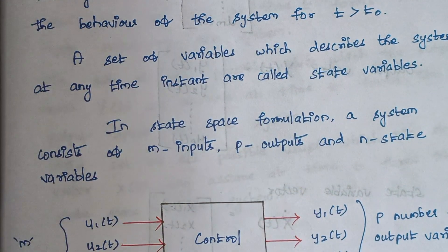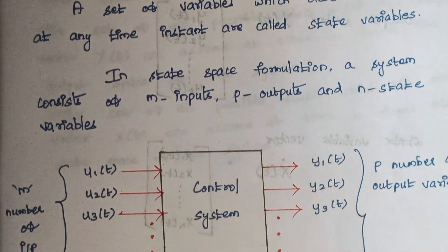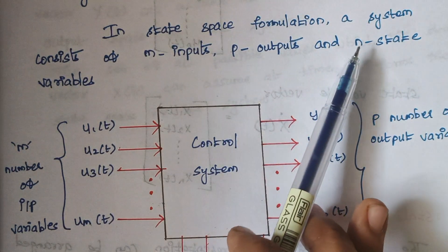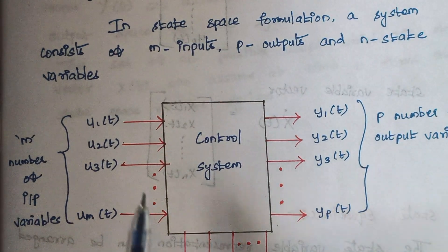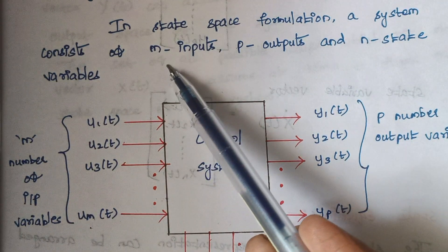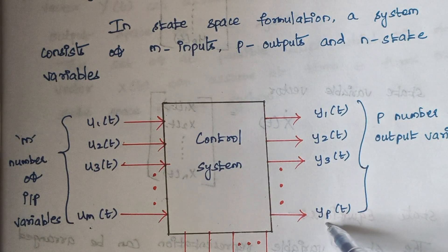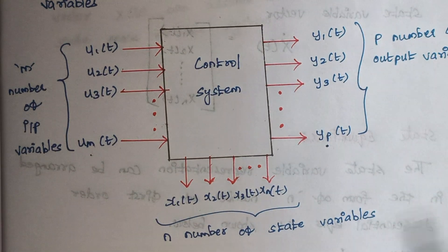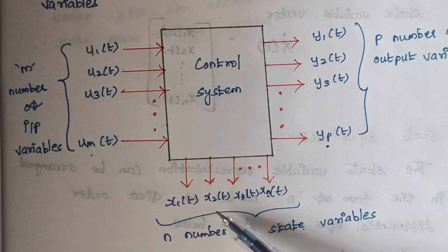In state space formulation, a system consists of M inputs, P outputs, and N state variables. M, P, and N denote the maximum number of each. Input variables are denoted as U1, U2, U3 up to M. Similarly, P outputs: Y1, Y2, Y3 up to P. State variables have a maximum limit of N, so X1, X2 up to XN.